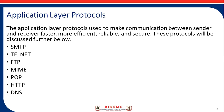Application layer protocols define how application processes — that means client and server running on different end systems — pass messages to each other. An application layer is an abstract layer that handles the sharing protocol of the TCP/IP and OSI model. The application layer protocol is used to make communication between sender and receiver faster, more efficient, reliable and secure.